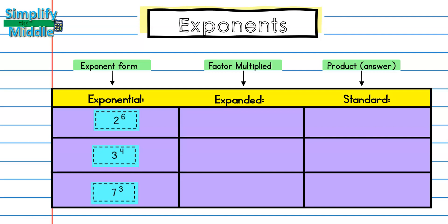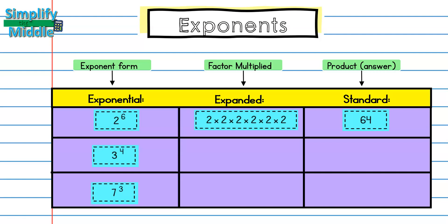So we see that we have 2 to the 6th power here. That means that my base 2 is going to be multiplied by itself 6 times. So in expanded form, that's 2 times 2 times 2 times 2 times 2 times 2. To get the standard form, I would multiply all of these 2's together. 2 times 2 is 4, times 2 is 8, times 2 is 16, times 2 is 32, and finally 32 times 2 is 64. So 64 is our standard form.